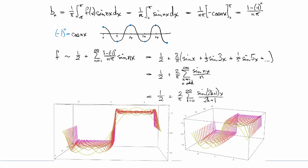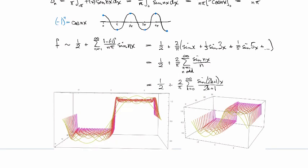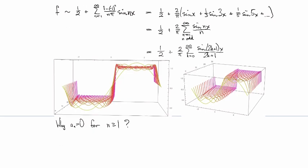Let's take a look at this question of why aₙ is equal to zero for n greater than or equal to one.